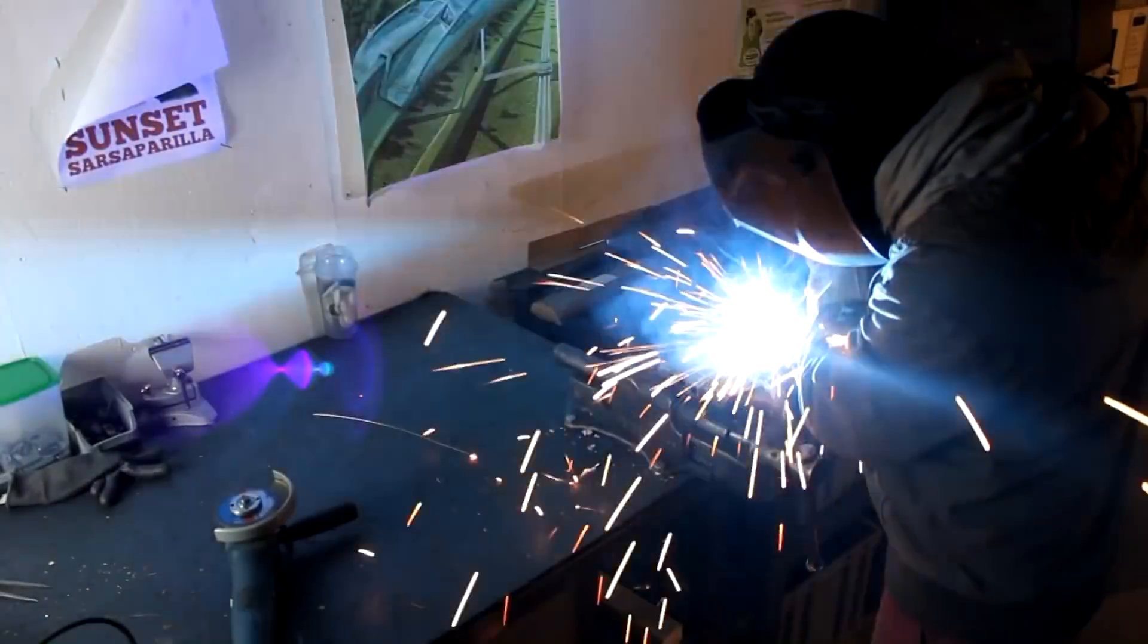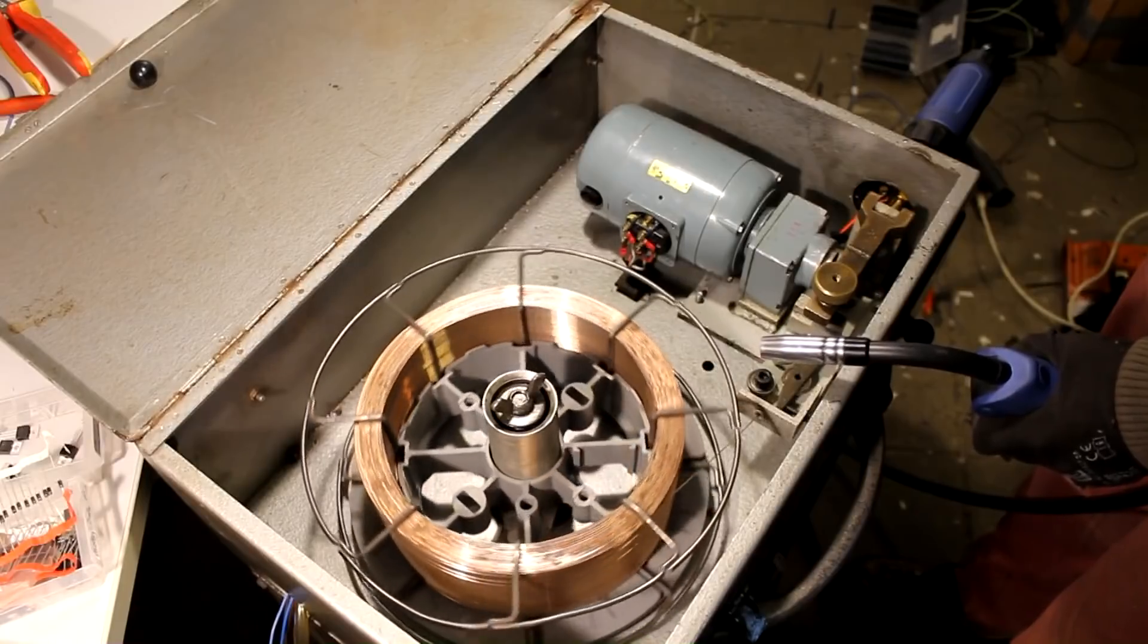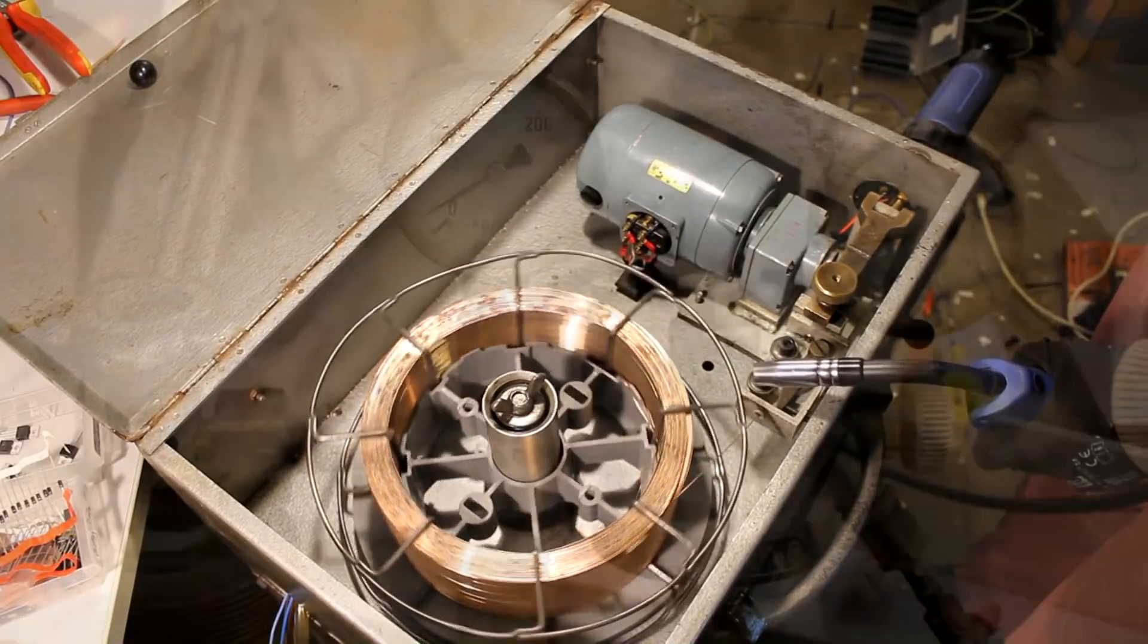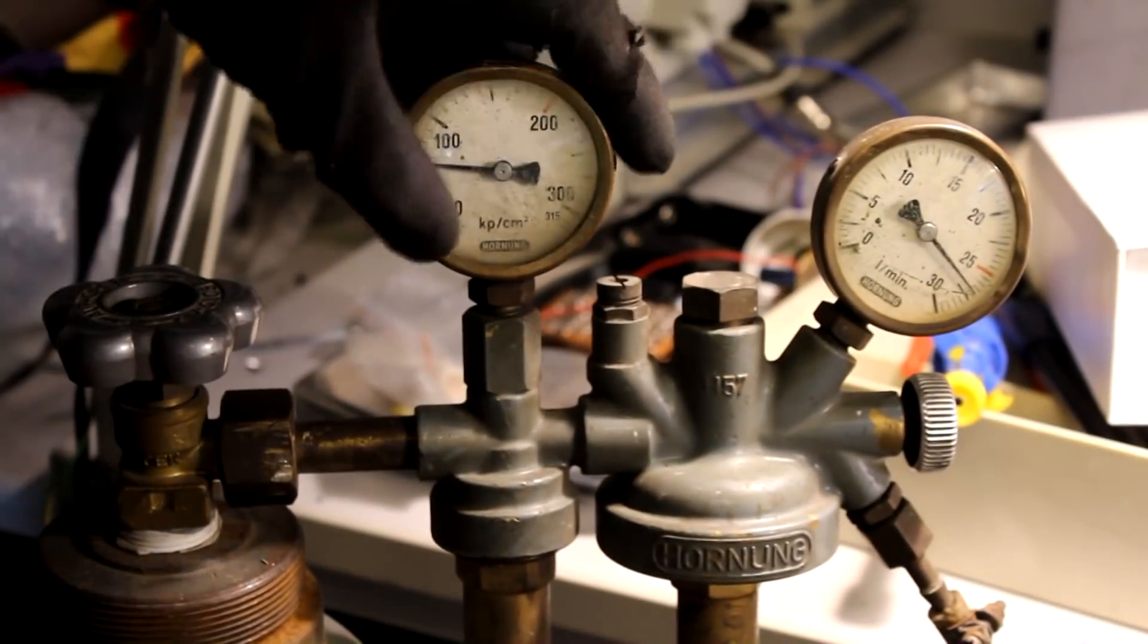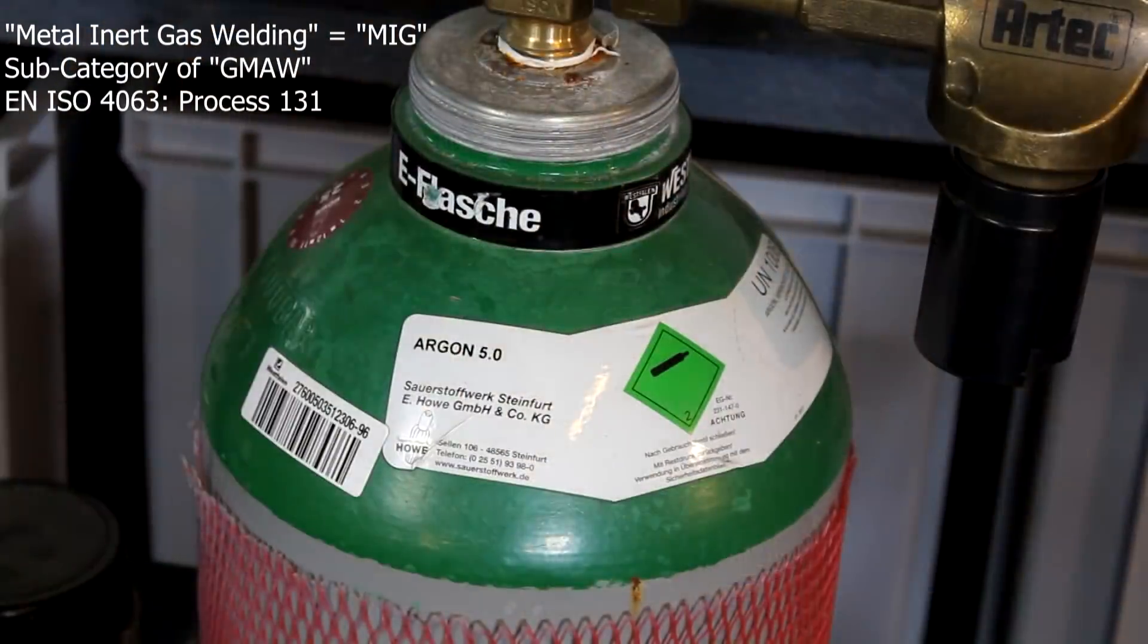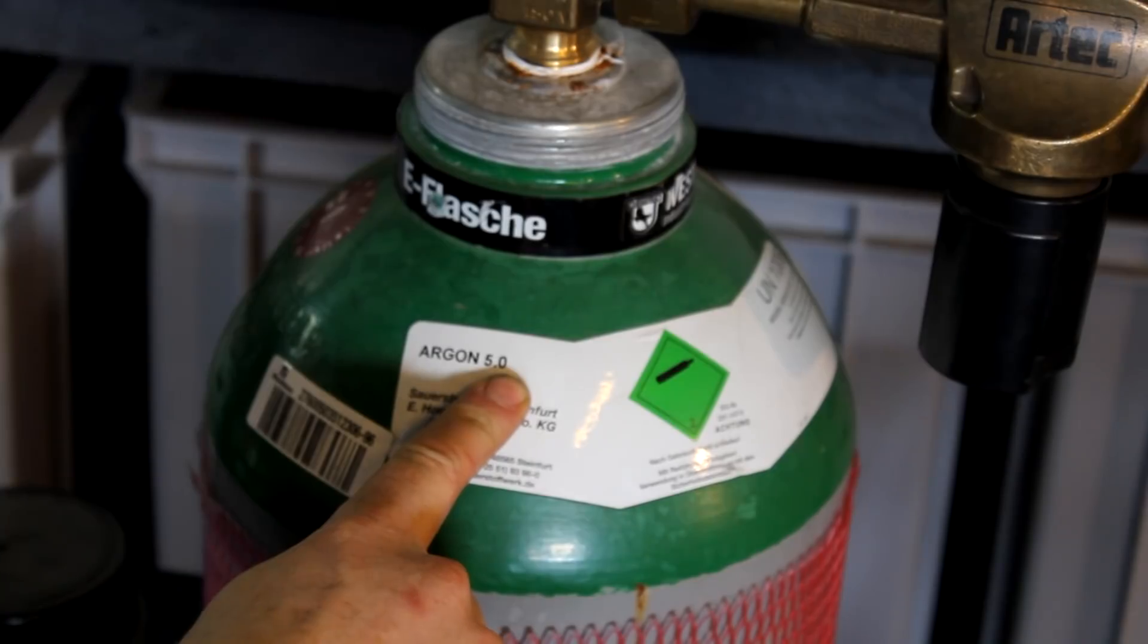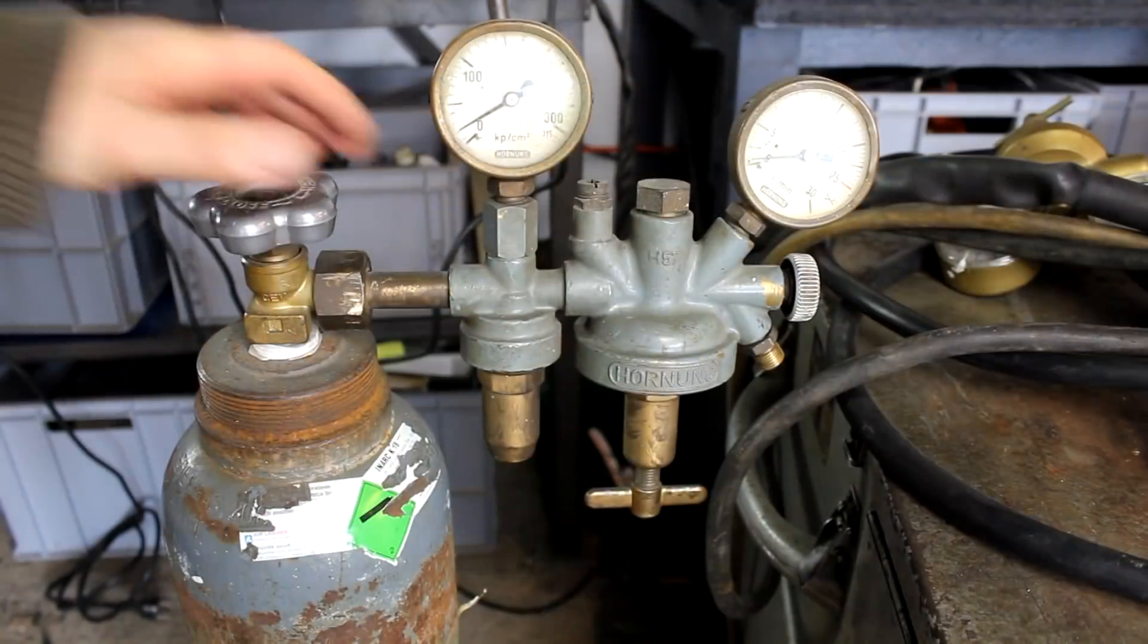MIG MAG welding or gas metal arc welding requires a welding gun and a wire feeder and also either an inert gas and active gas or a mixture of inert and active gas. MIG is for metal inert gas welding and is typically used for rather special jobs like welding titanium.